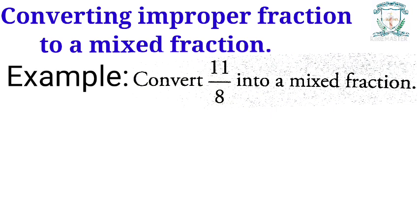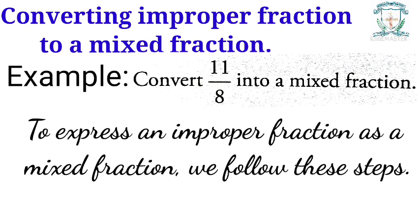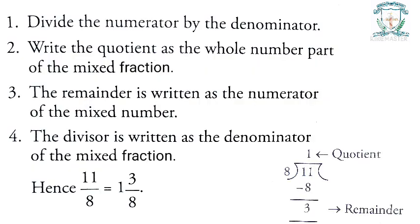Converting improper fraction to a mixed fraction: for example, convert eleven by eight into a mixed fraction. Step one: divide the numerator by the denominator. Step two: write the quotient as the whole number part. Step three: the remainder is written as the numerator. Step four: the divisor is written as the denominator. Hence, eleven by eight can be written as one and three by eight.